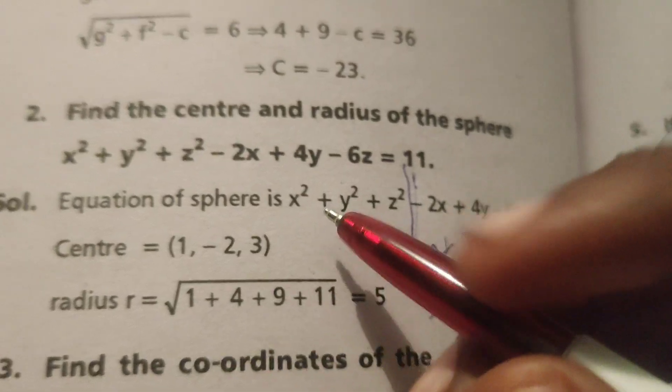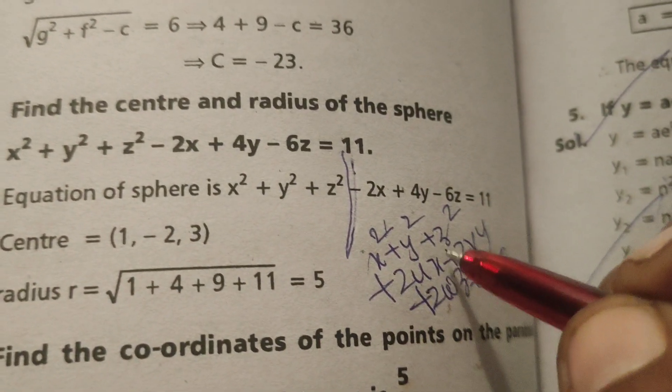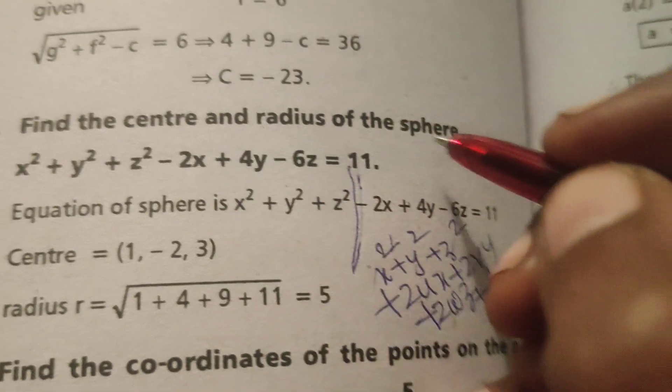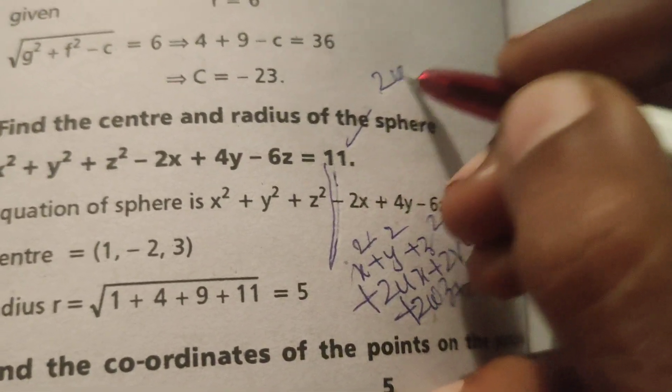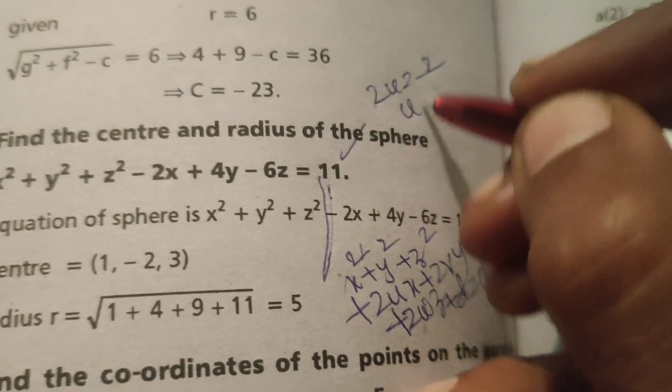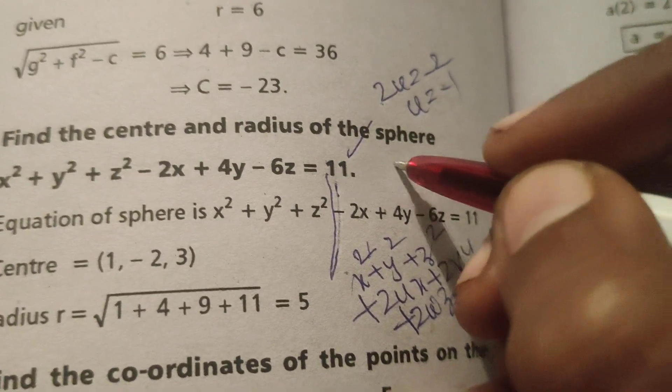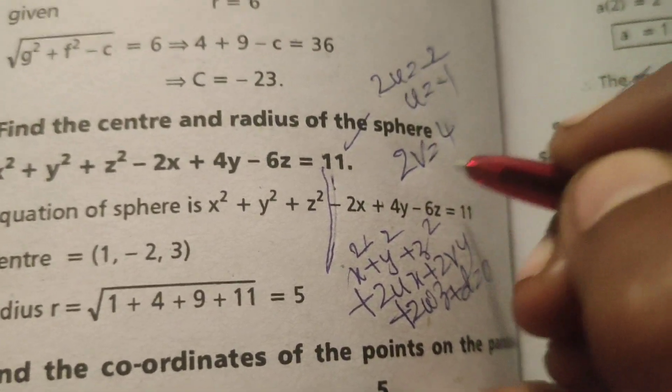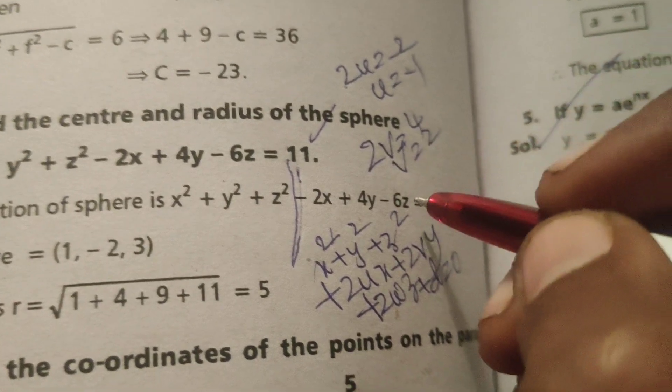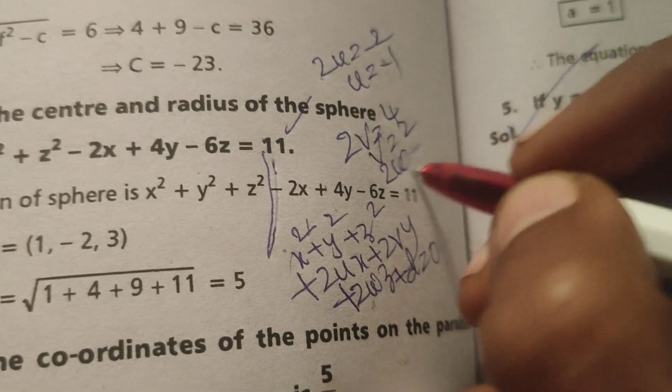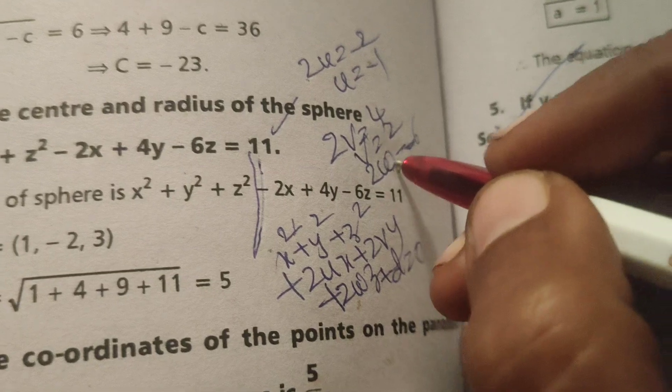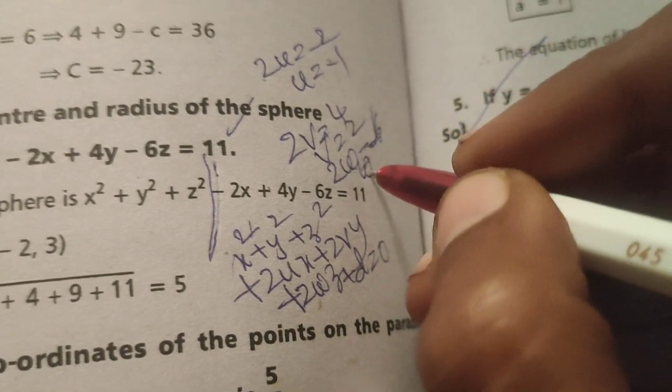Therefore by the given problem, 2u equals to minus 2, u equals to minus 1, and 2v equals to 4, v equals to 2, 2w equals to minus 6, w equals to minus 3.